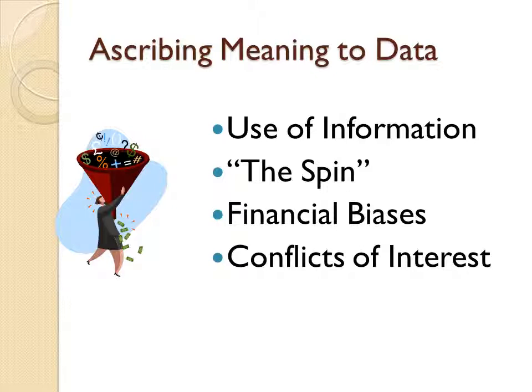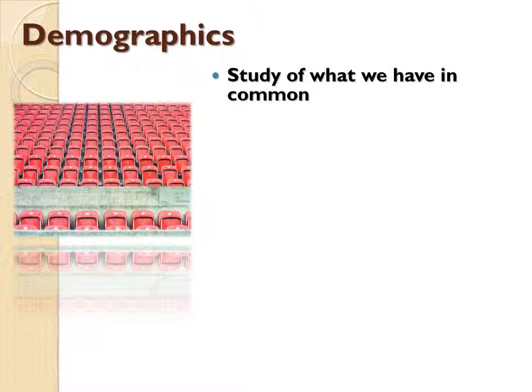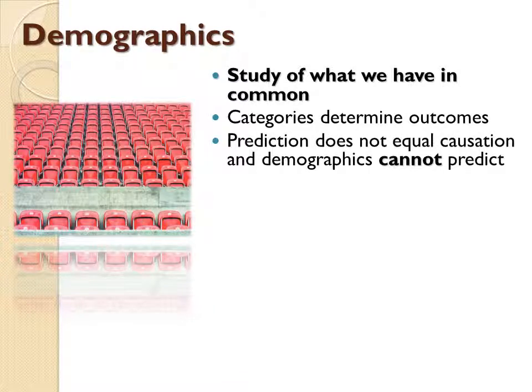There is an area related to statistics called demographics. Demographics is not statistics, though in popular discourse they're sometimes conflated. Statistics is particularly about probability; demographics is just counting stuff — it's a study of what different groups of people have in common. The categories we pick determine the outcome, which you can see with the U.S. Census. Demographics cannot predict — that requires more analysis. Demographics are just a rate of things; you have to do more to get to the point of prediction.